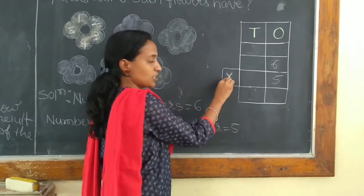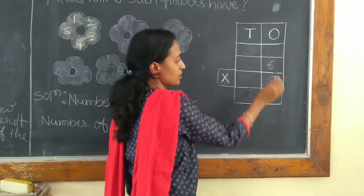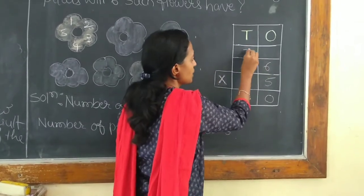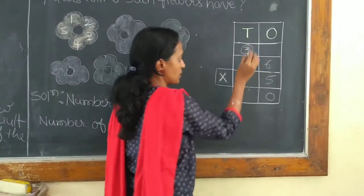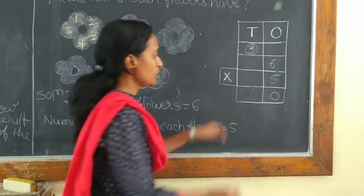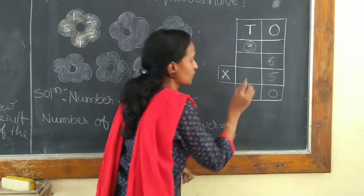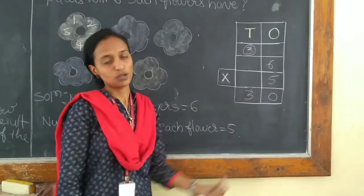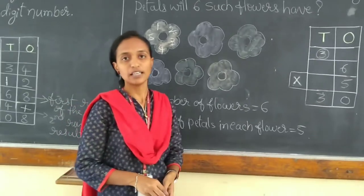The sign for multiplication is into. 6 times 5 is 30. 0 you have to place at the 1's place. And 3 is given carry at the 10's place. So, nothing is here. So you have to assume it is 0. 3 plus 0 is 3. So when you multiply 6 times 5, you will get the product 30. Hope I am clear to you guys. Thank you.